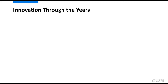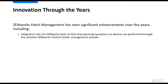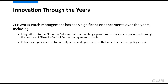Twenty years ago, ZENworks patch management started as a non-integrated standalone product that provided patch deployment to Windows, Mac, and Linux devices based on mandatory baselines. The product has seen significant enhancements over the years, including integration into the ZENworks suite so that patching operations on devices are performed through the common ZENworks Control Center Management Console, rules-based policies to automatically select and apply patches that meet the defined policy criteria, and patching of click-to-run and software applications like Office 365.